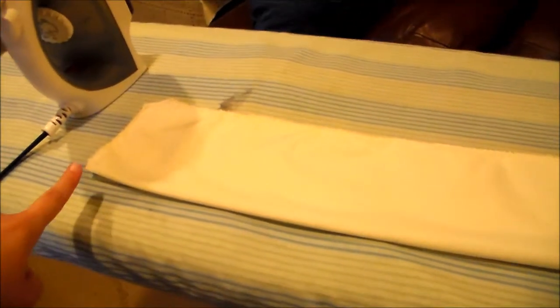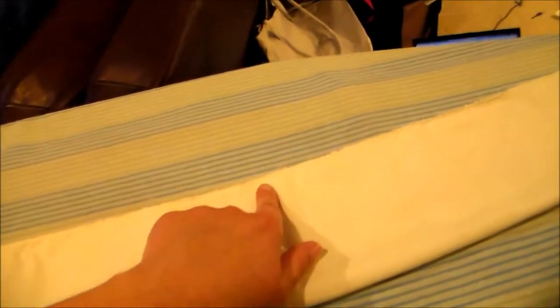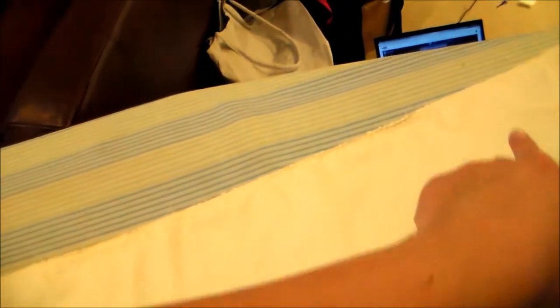Next, you're going to fold it in half hot dog-wise, and then you're going to sew up and around until you get to the middle, and then you're going to leave a section open, and then you're going to keep going and down.